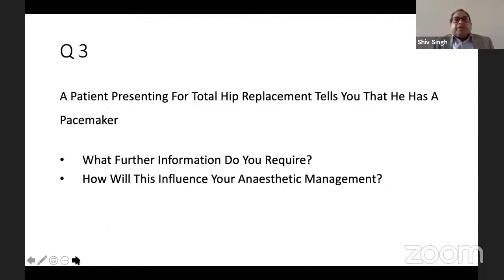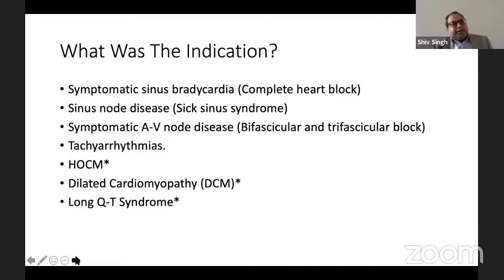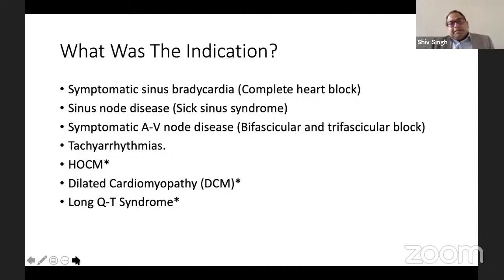The third question: a patient presenting for total hip replacement has a pacemaker. What further information do you require, and how will this influence your anaesthetic management? First, you need to know the indication — why did the patient end up with a pacemaker? Indications include symptomatic sinus bradycardia, complete heart block, sick sinus syndrome, symptomatic AV node disease such as bifascicular and trifascicular block, tachyarrhythmias, HOCM, dilated cardiomyopathy, and long QT syndromes.